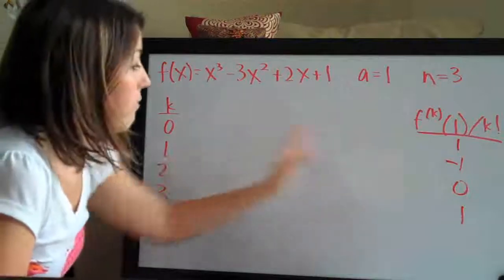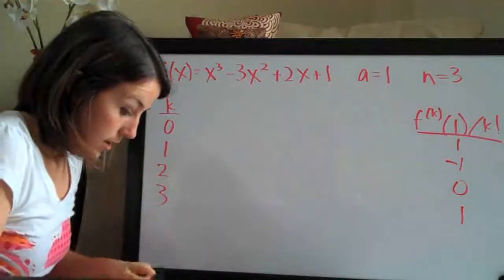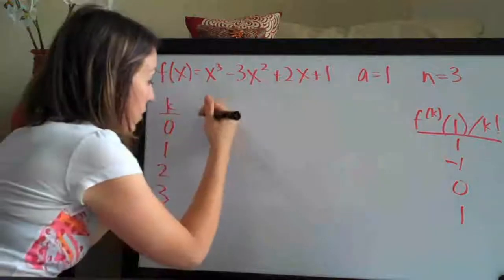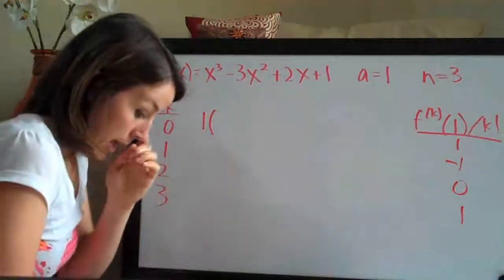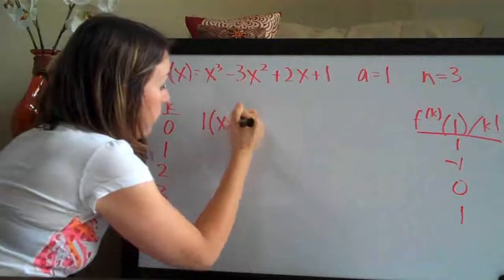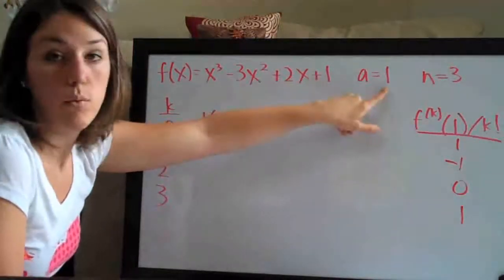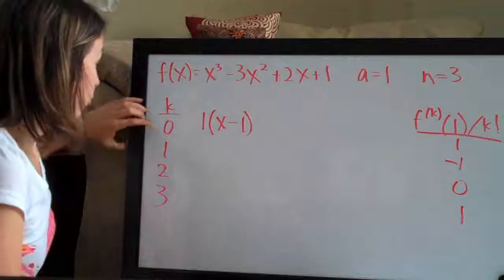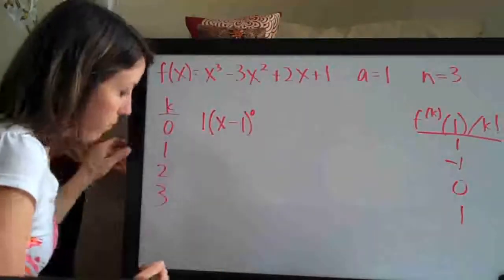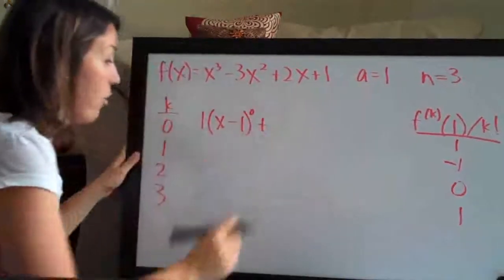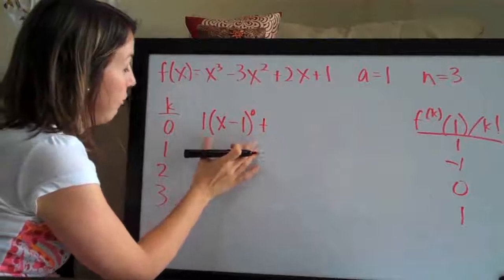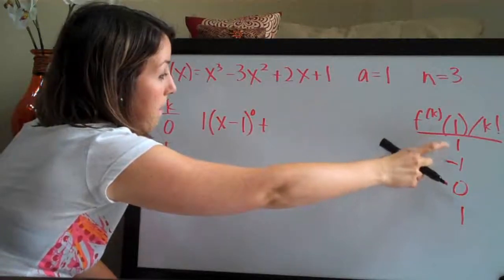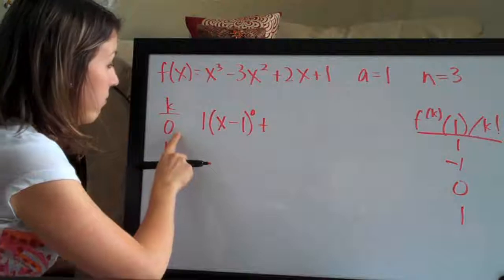So the Taylor polynomial — now that we've got all of this written down, the way that we construct it is like this. First, this number over here is the coefficient. So let's go ahead and write 1 and then a parenthesis, then we do x — because that's our variable — minus whatever we're given for a, which is 1. So x minus 1, and then we raise that to whatever number is over here, in this case the 0 power. Then we just write a plus sign and go on to the next term. This coefficient here comes from the fourth column; the 1 comes from A and 0 comes from the first column K.